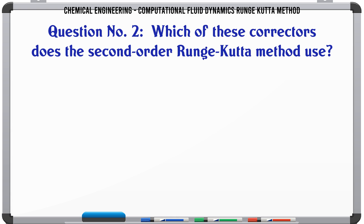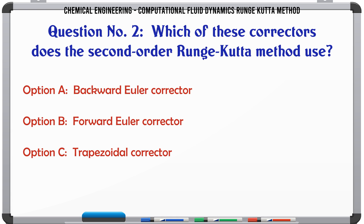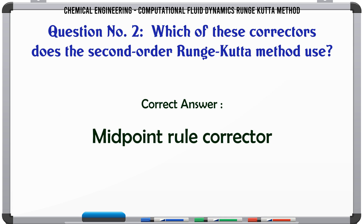Which of these correctors does the 2nd order Runge-Kutta method use? A: backward Euler corrector. B: forward Euler corrector. C: trapezoidal corrector. D: midpoint rule corrector. The correct answer is: midpoint rule corrector.